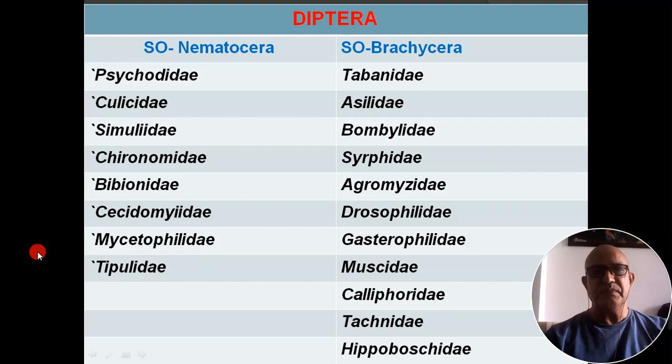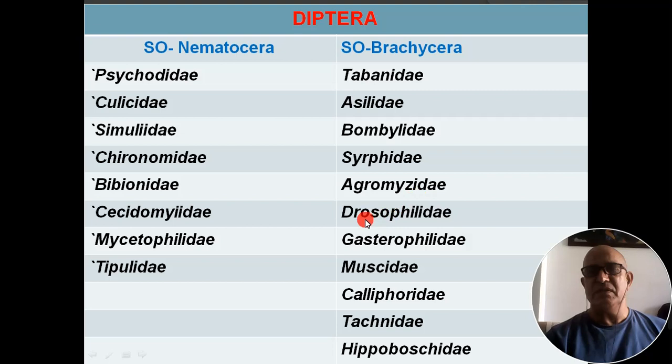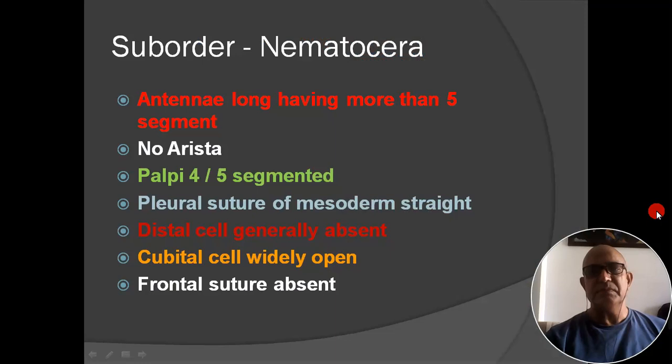Diptera has two suborders: Nematocera and Brachycera. Under Nematocera, the eight families are: Psychodidae, Culicidae, Simuliidae, Chironomidae, Bibionidae, Cecidomyiidae, Mycetophilidae, and Tipulidae. Under Brachycera, the main families are: Tabanidae, Asilidae, Bombyliidae, Syrphidae, Agromyzidae, Drosophilidae, Gasterophilidae, Muscidae, Calliphoridae, Tachinidae, and Hippoboscidae.